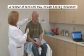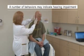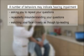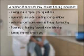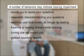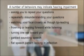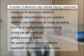A number of behaviors may indicate hearing impairment. These include asking you to repeat your questions, repeatedly misunderstanding your questions, watching your face closely as though lip-reading, frowning or leaning forward while listening, turning one ear toward you, garbled-sounding speech or a flat speech pattern lacking in inflection, or speaking in an inappropriately loud voice.